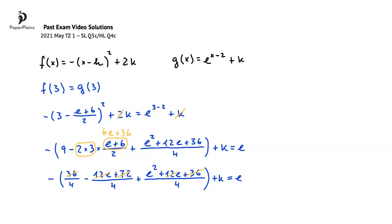So inside the brackets, we are just left with e squared over 4, and taking into account the negative sign in front of the brackets, we get that negative e squared over 4 plus k is equal to e. From here, k is e plus e squared over 4, and this is what we wanted to show.